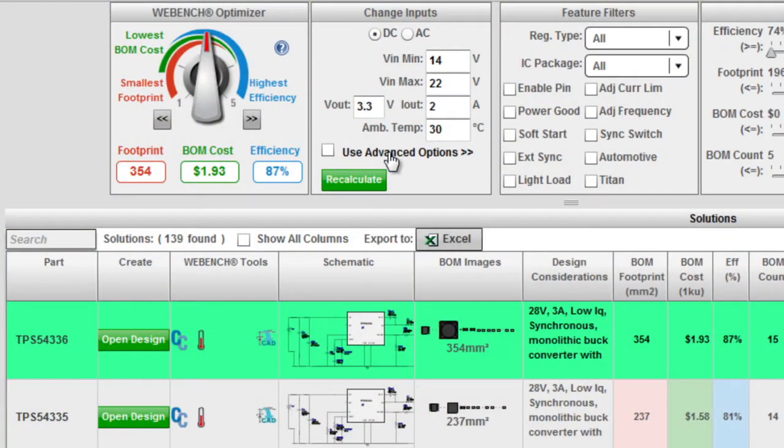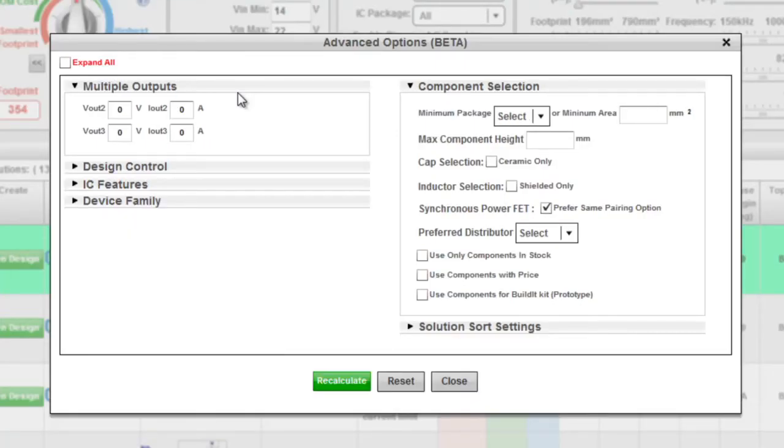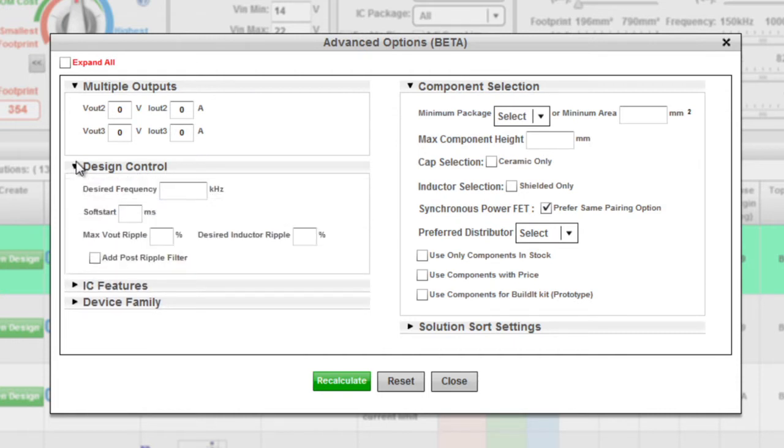The WebBench Advanced Visualizer feature gives you more flexibility to easily customize your designs to your performance requirements. You can see here the Advanced Visualizer panel gives you more control over your design simulation, with a number of operating settings for key specs, including desired frequency and Vout ripple.